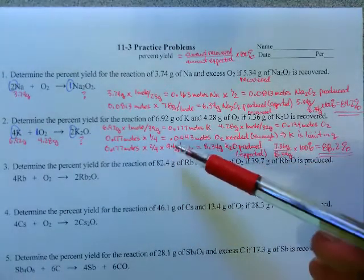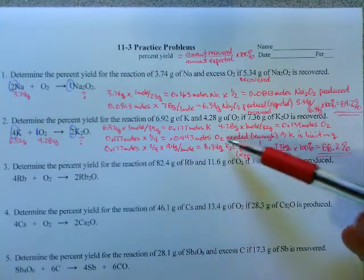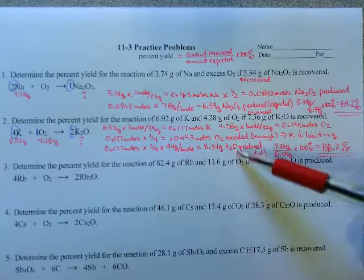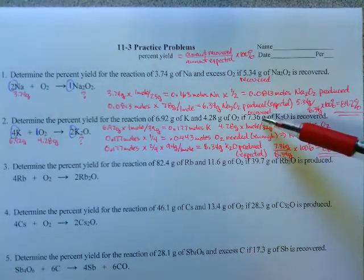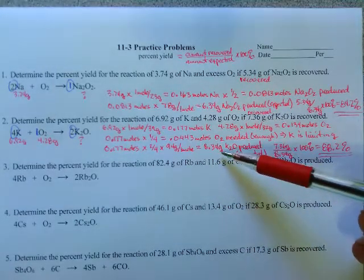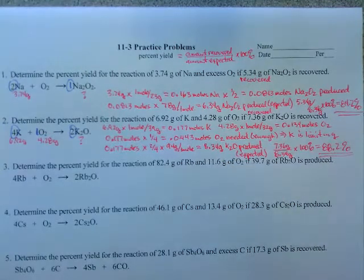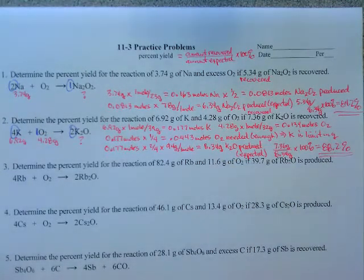And then we've got to go back to grams. What we'll find here is what we expect to find. We take what we actually recovered divided by what we expect times 100, and we have our percent yield.